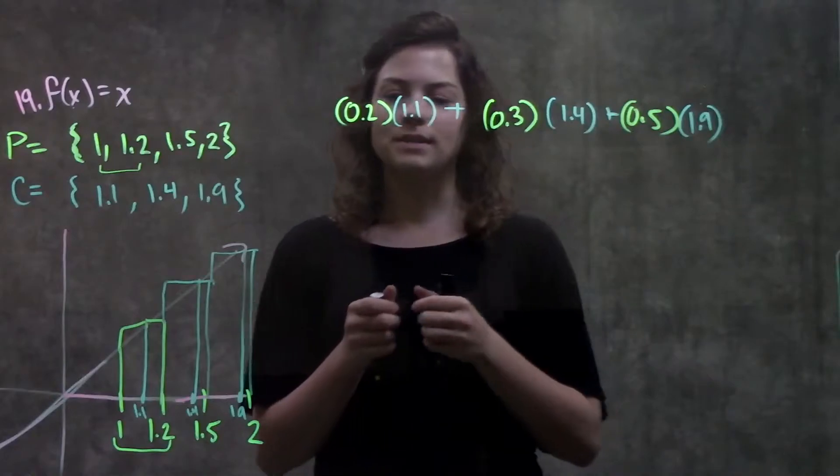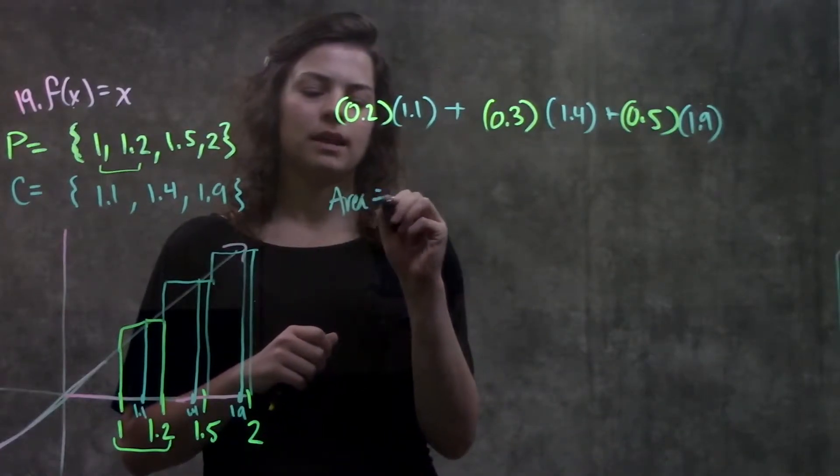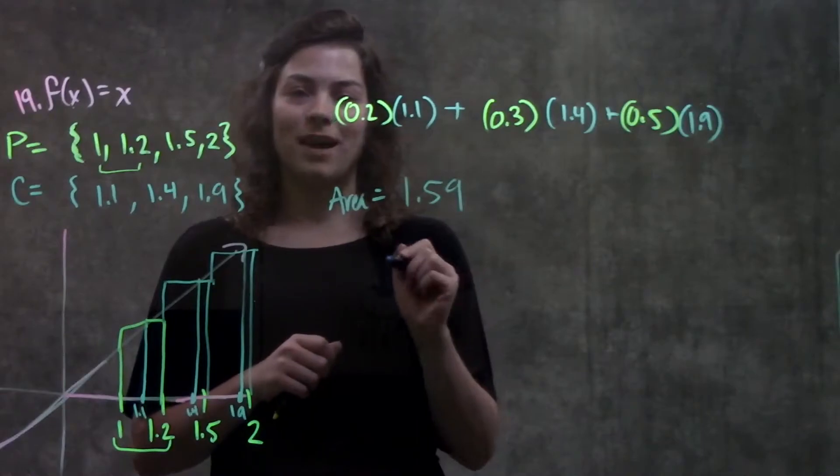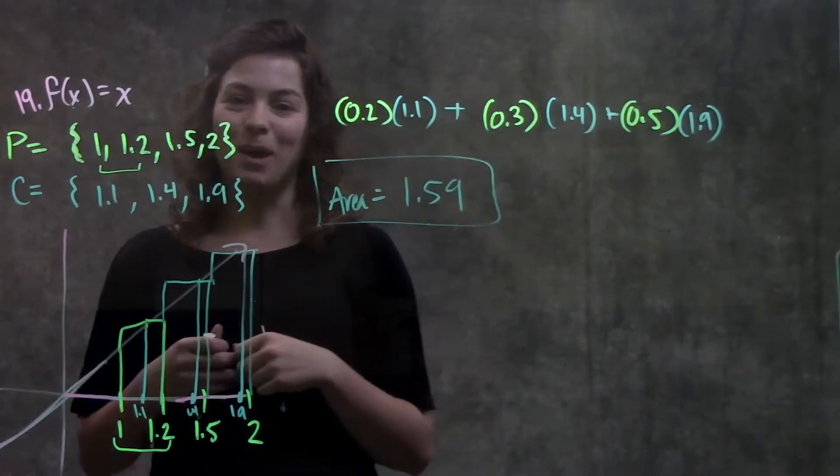And when you multiply all these things together, you should get that the area is equal to about 1.59. And that's it for this problem.